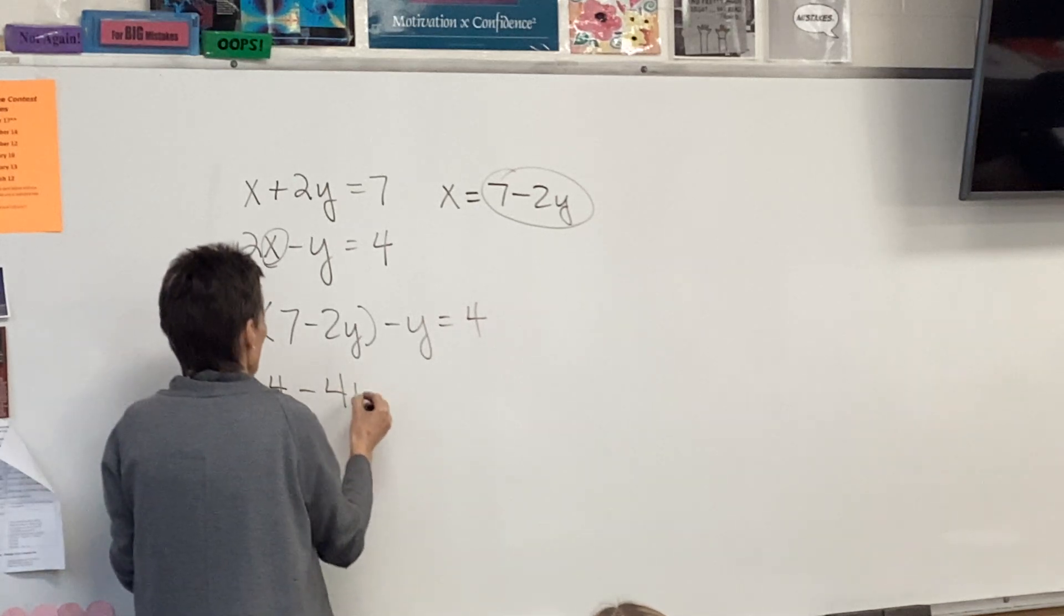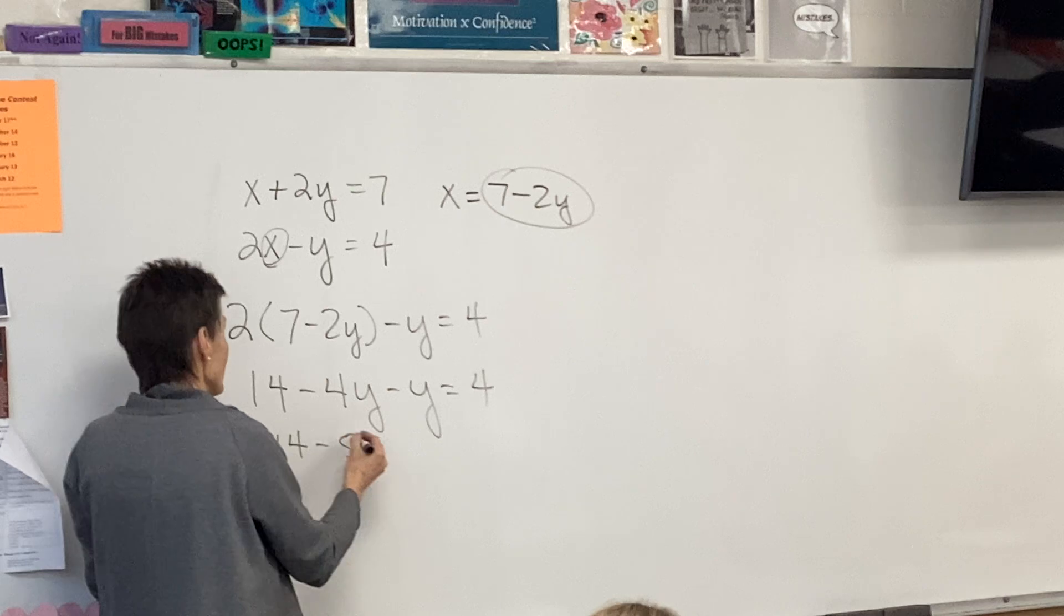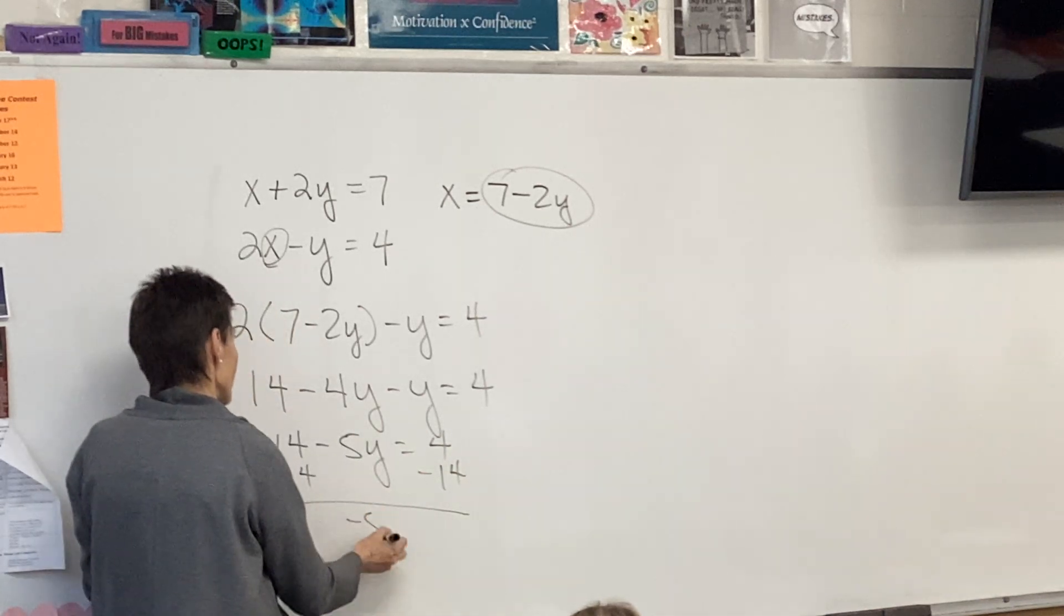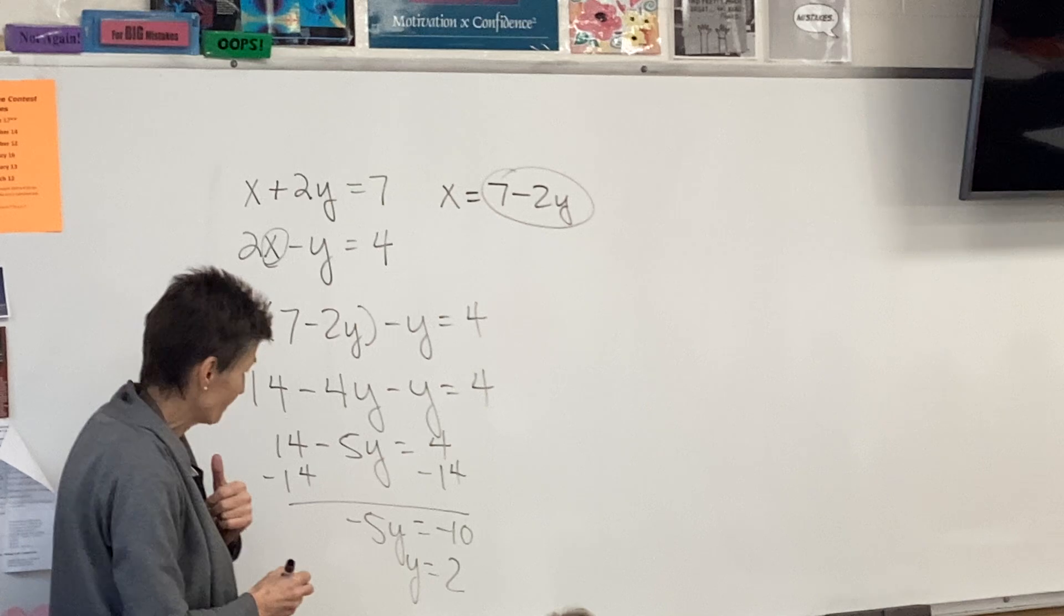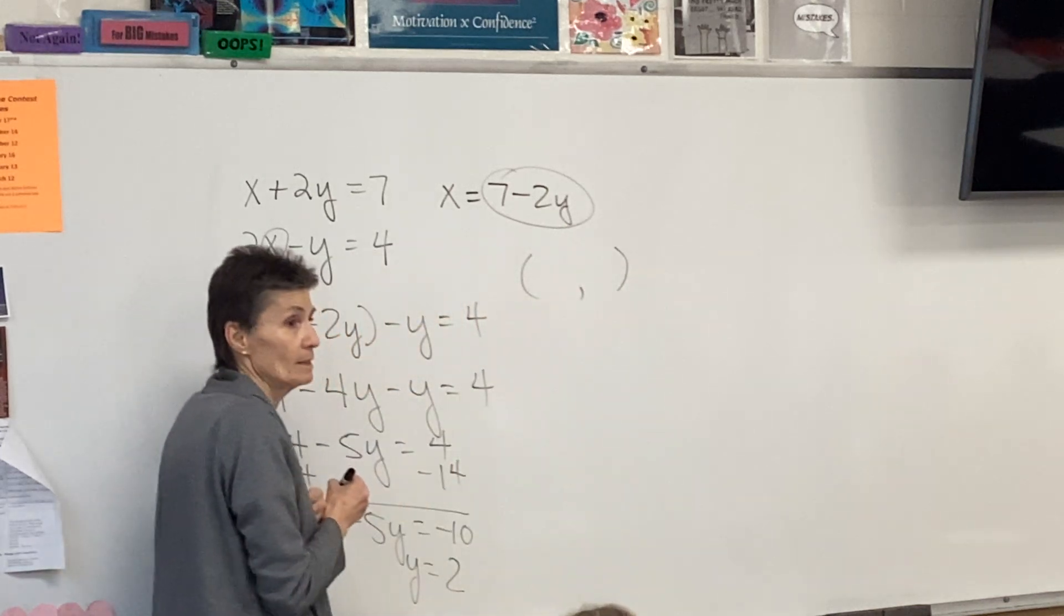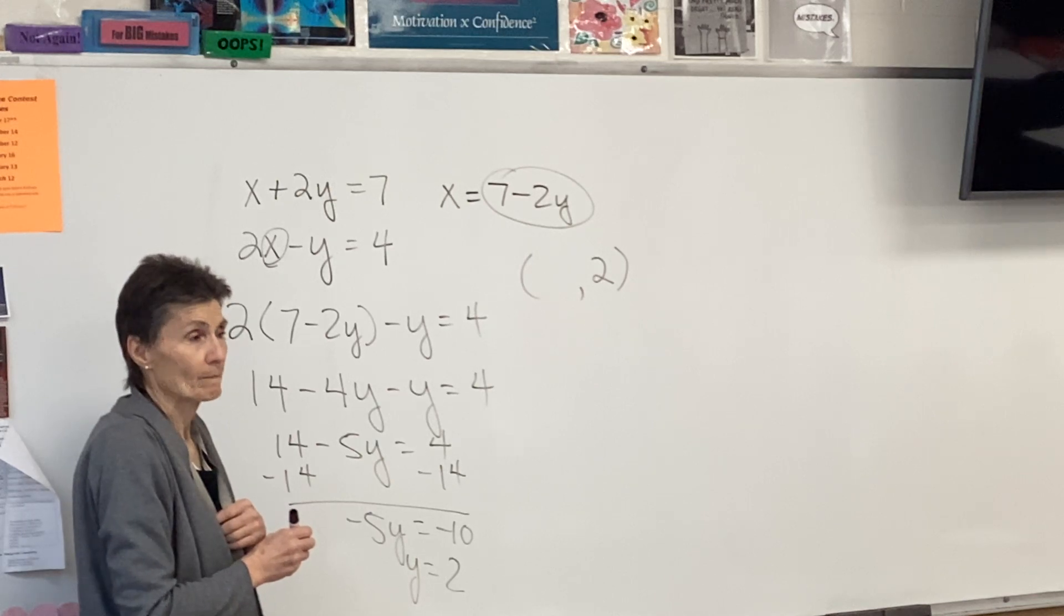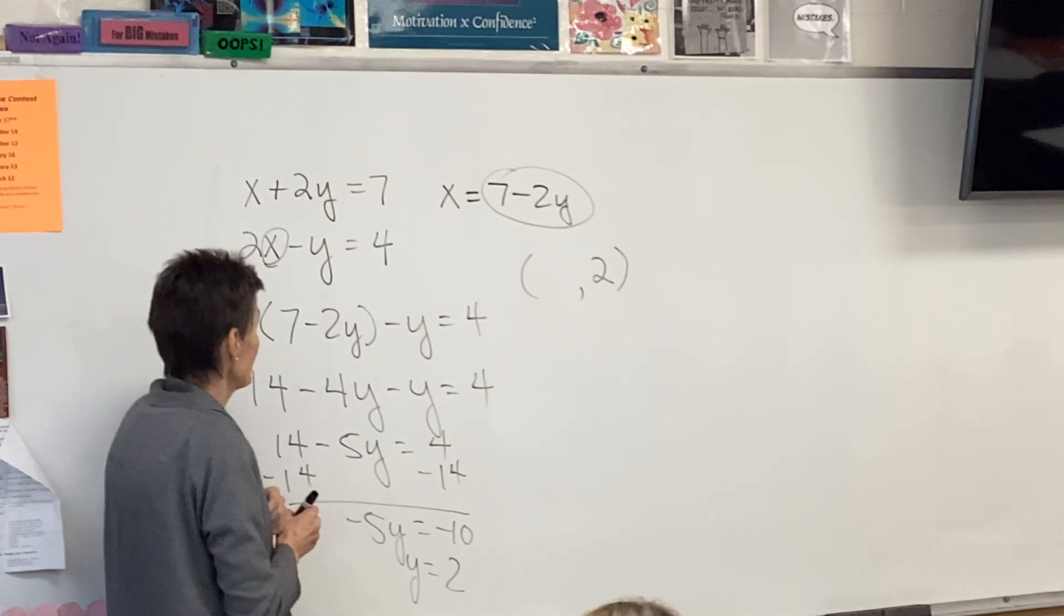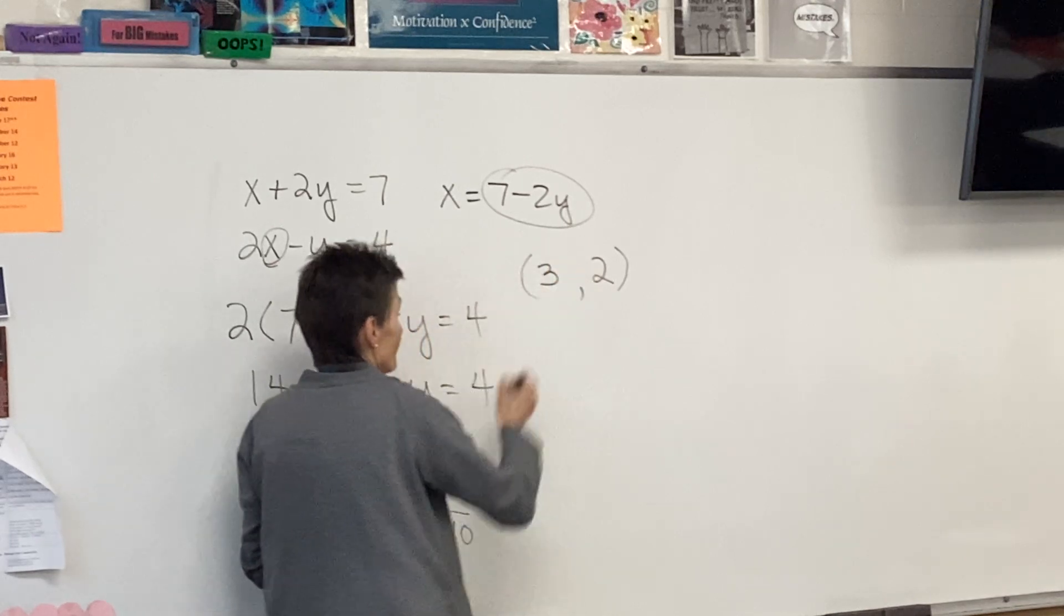14 minus 4y minus y equals 4, so I'm going to do my distributive property after I substituted in. So I'm combining my terms and now I'm going to solve the equation. So it looks like y equals 2. Is anybody looking ahead and got y equals 2? But I'm not done because my answer has to be an ordered pair. And I have figured out that the y is 2, and now I'm going to plug it in. And x equals... what does x equal if I plug in the 2 for y? So 3 comma 2.